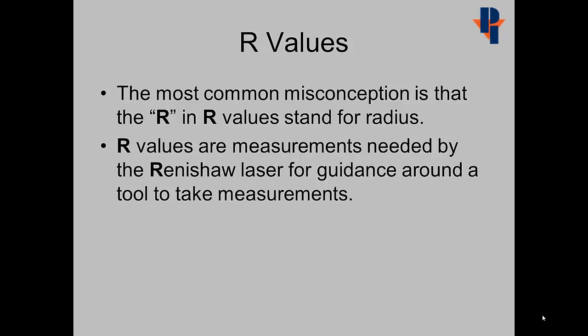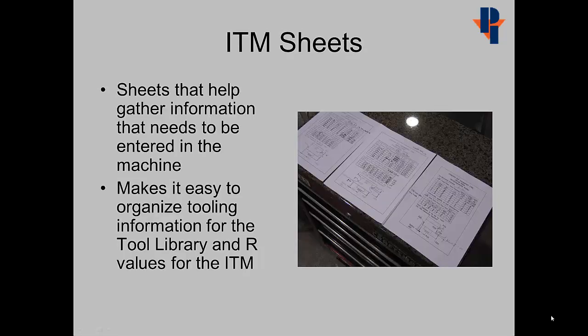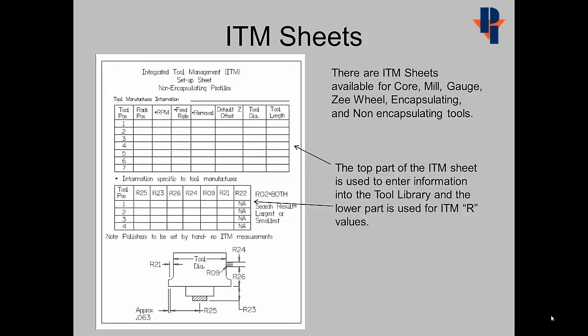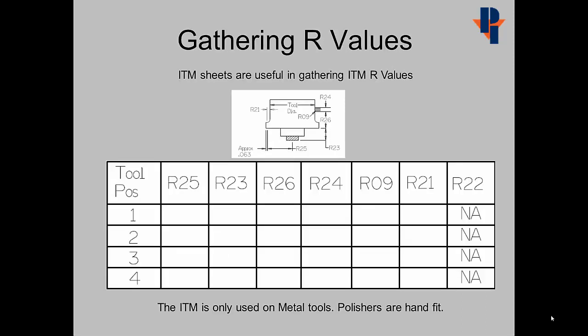The most common misconception is that the R and R values stand for radius. R values are measurements needed by the Renishaw laser for guidance around a tool to take measurements. ITM sheets are useful in gathering information that needs to be entered into the machine. It makes it easy to organize tooling information for the tool library and the R values for the ITM. The top part of the ITM sheet is used to enter information into the tool library, and the lower part is used for ITM R values. ITM is only used on metal tools. The polishers are hand fit.